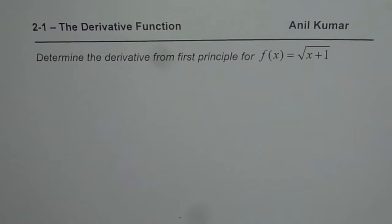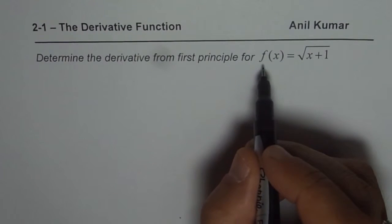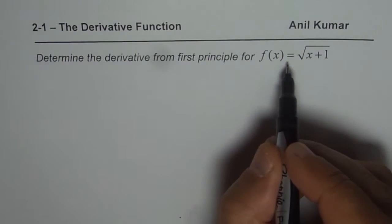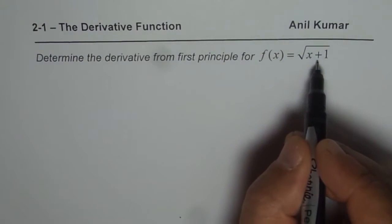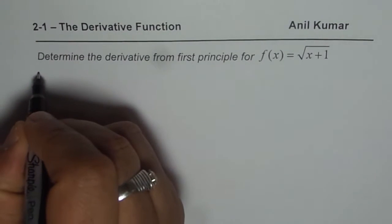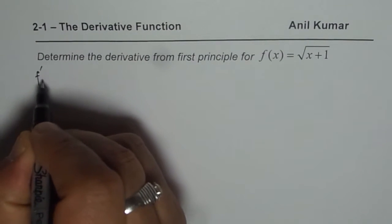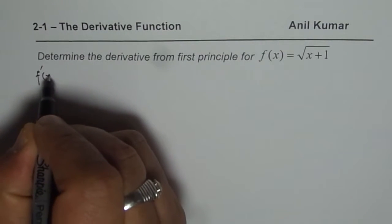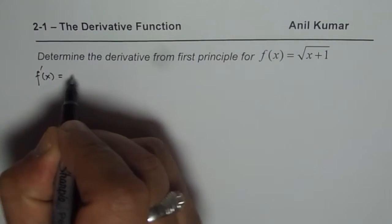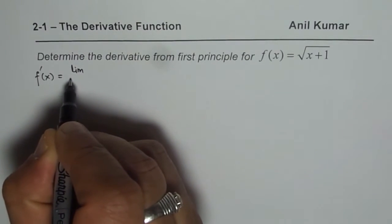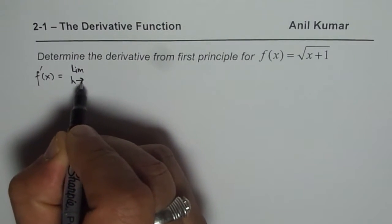I'm Anil Kumar and here is the second example to find the derivative from first principle. The function is square root of x plus 1. So the derivative is f'(x) equals the limit as h approaches zero.